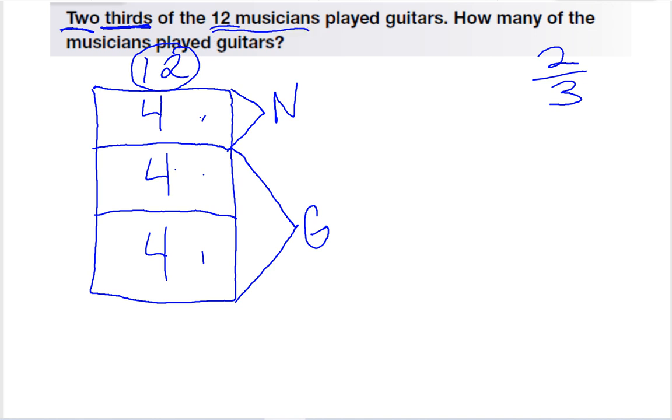Okay, now we look at what the question asks. The question is asking, how many played guitars? So I'm looking at these two numbers. And four plus four equals eight. That means that eight people played guitars.